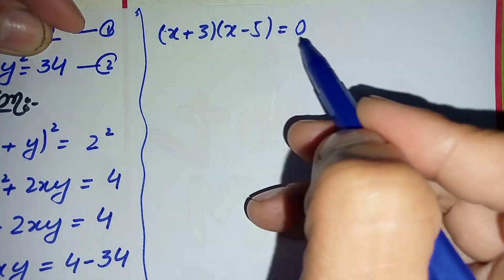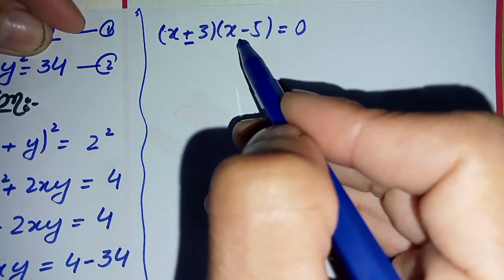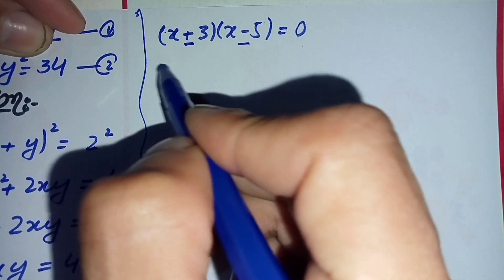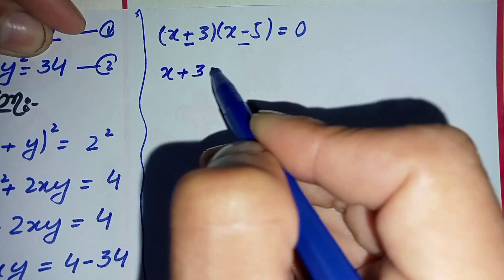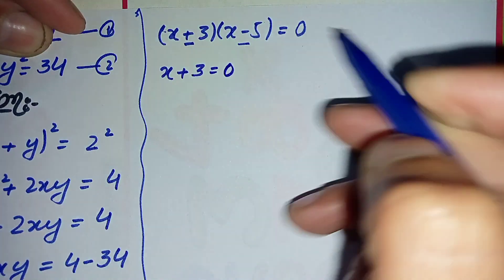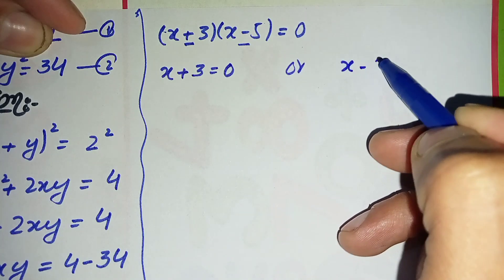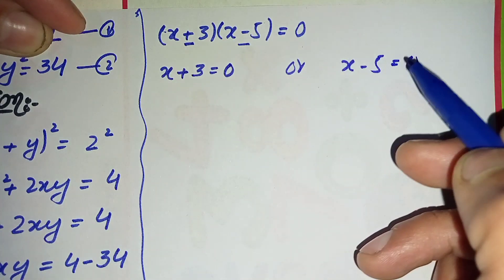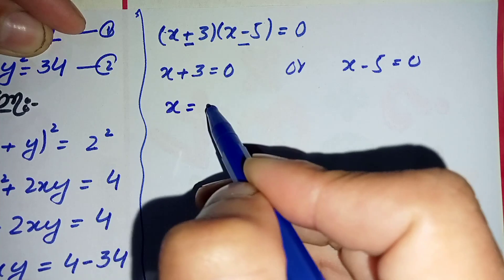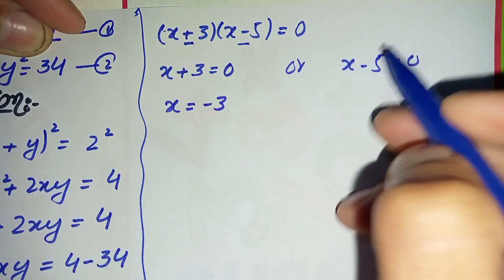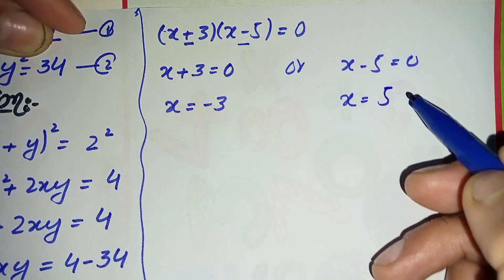Since the product of these two expressions is zero, either x plus 3 is equal to 0 or x minus 5 is equal to 0. From the first we get x is equal to minus 3, and from the second we get x is equal to plus 5.